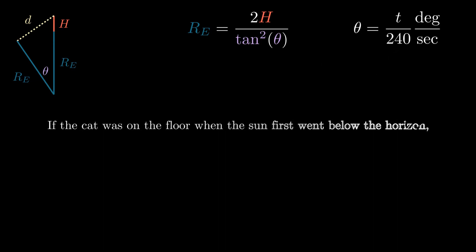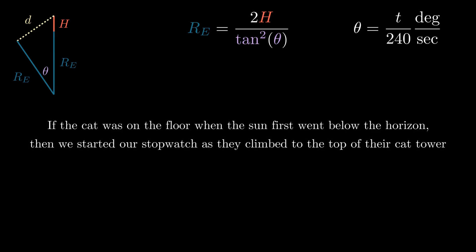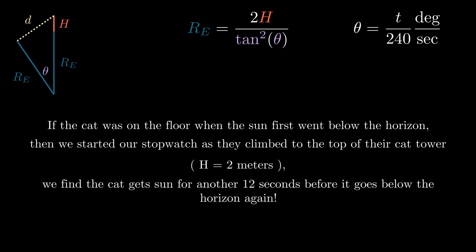Revisiting our initial setup, if the cat was on the floor when the top of the sun first went below the horizon, then we started our stopwatch as they climbed to the top of their cat tower, which has a height of 2 meters, we found that the top of the sun went below the horizon after just 12 seconds.